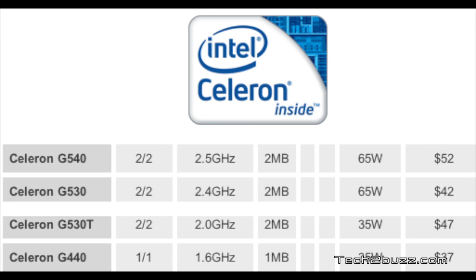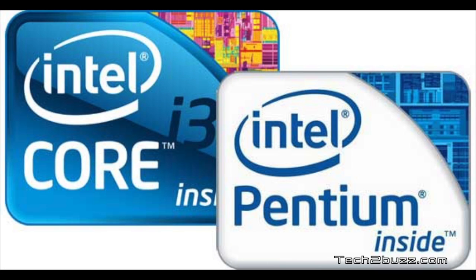For the Celeron lineup, the top three chips are dual core and the last one is a single core chip. In terms of architecture, this Celeron chip is very similar to the Pentium Sandy Bridge chip; the only difference is the maximum clock rate is up to 2.5GHz. In my opinion, the second Celeron chip, the G530, offers the best bang for the buck. If you're looking to build an entry-level budget computer, you can use this Pentium or Celeron chip with the Intel H61 chipset.